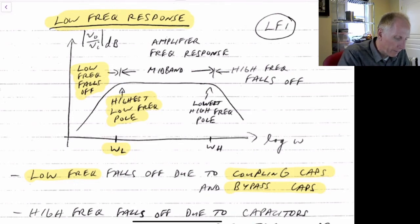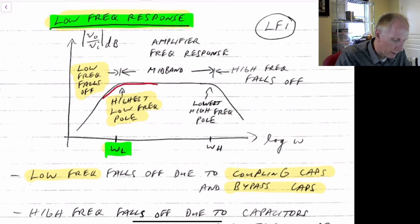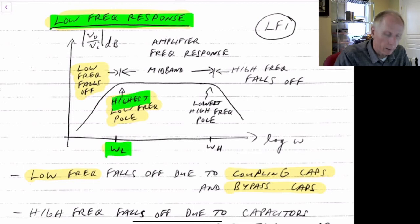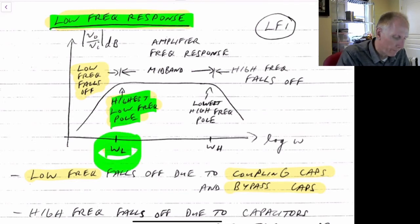What we're looking for is our low frequency response. We're trying to find the cutoff omega L, which is our 3 dB frequency, where it changes from going in mid-band and starts to roll off at low frequencies. We'll find that the highest of the low frequency poles — there may be more than one — generally determines this omega L.